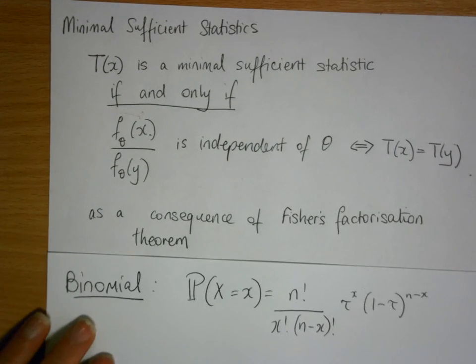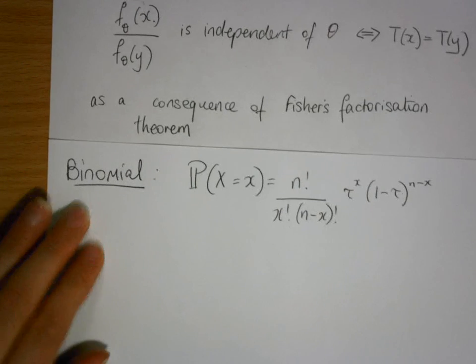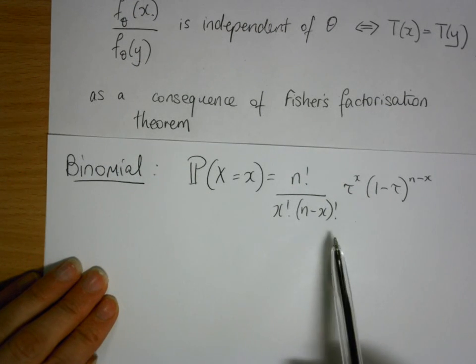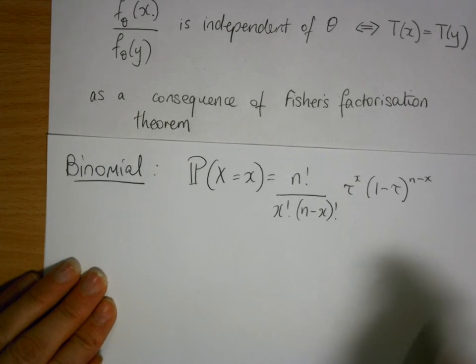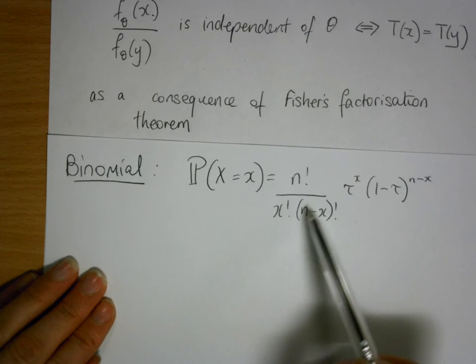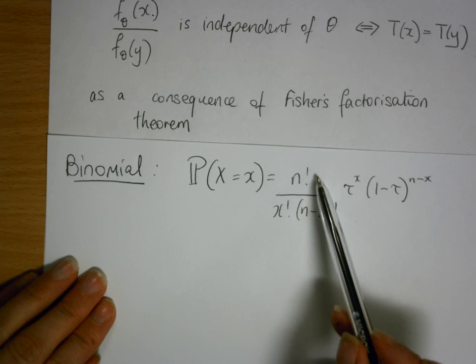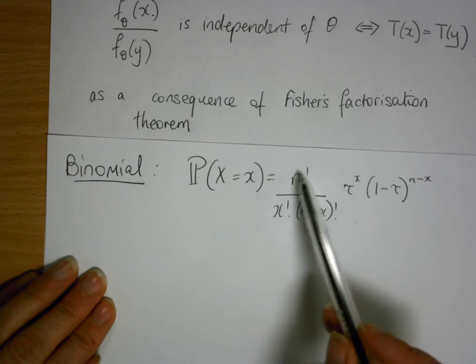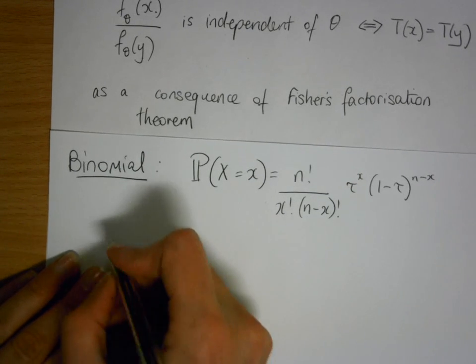So we look at our statement of our binomial distribution in terms of x, we think about it in terms of y. We're interested in constant with respect to the parameter, so actually we can completely ignore these constants here.